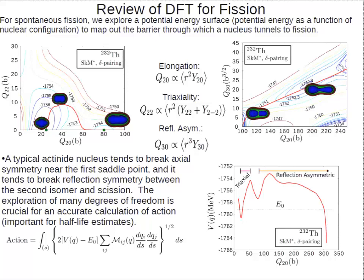It turns out that a good estimate for fission half-lives and other fission quantities can be achieved with essentially a least action principle. You map out the path that has the least action — the trajectory of least action — and that will give you a very good estimate for fission half-lives.